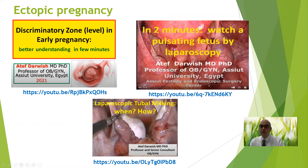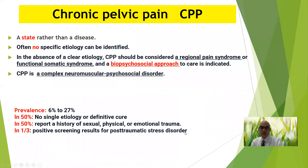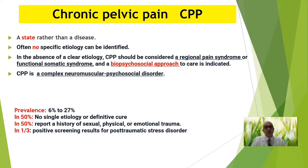Acute pelvic pain with a positive pregnancy test should always include ectopic pregnancy in the differential. I invite you to visit the YouTube channel for lectures on the discriminatory zone in ectopic pregnancy, pulsating ectopic pregnancy, salpingotomy procedure, and tubal milking procedure by laparoscopy. In summary, acute pelvic pain cases are mainly due to pregnancy complications (ectopic, threatened abortion) or, in non-pregnant patients, PID, adnexal torsion, ruptured ovarian cysts, or fibroid degeneration.